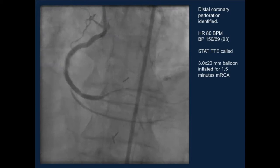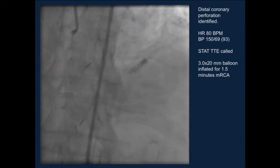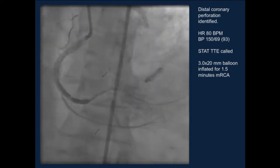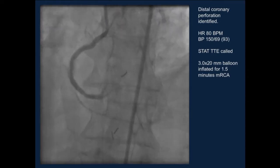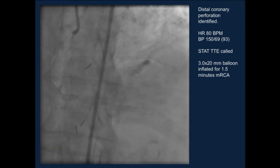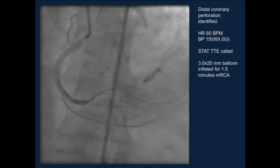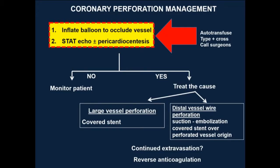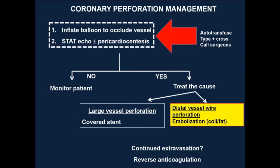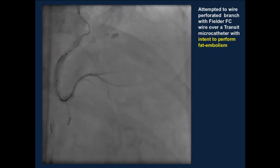So we completely agreed. Our thought process was: this doesn't look as dramatic as the first case we showed, but we didn't want to leave it alone because we were concerned it might progress. The patient might decompensate even though hemodynamically stable, and the stat ECG did not show any signs of pericardial effusion. Following the coronary perforation management algorithm, we did the first two steps — hemostasis and balloon inflation to occlude the vessel — then identified this as a distal wire perforation and considered coil or fat embolization.